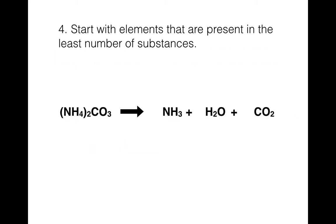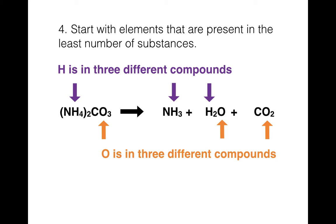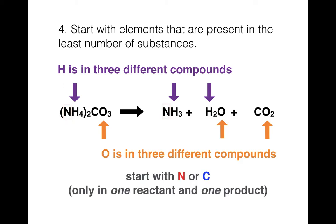Number four: start with elements that are present in the least number of substances. This gives you a good clue of where to start — you can really start anywhere, but sometimes there are better places. For example, this reaction has a lot going on. Hydrogen appears in three different things, and oxygen also appears in three different things — so don't start with those. Start with something easy. You have two good options: nitrogen or carbon. Nitrogen is just in one thing on the left and one thing on the right. Carbon also just on one thing on each side. Those are both good places to start.